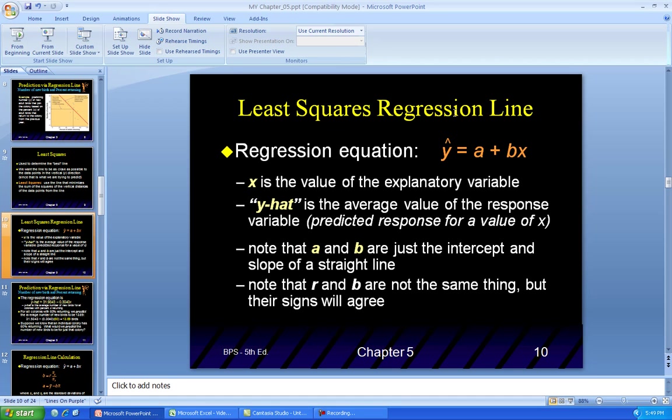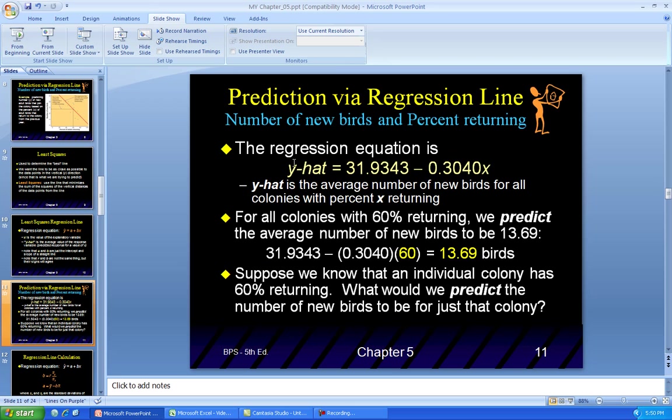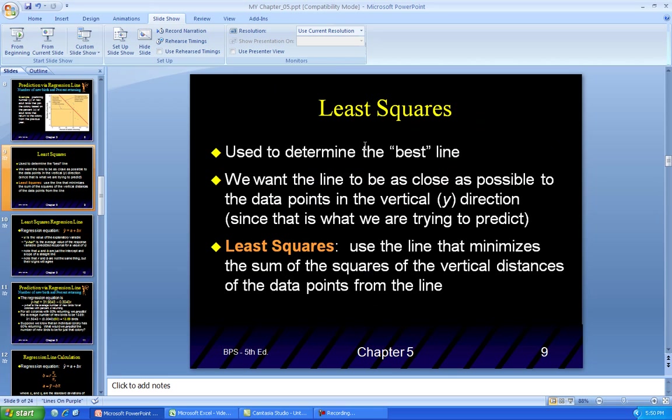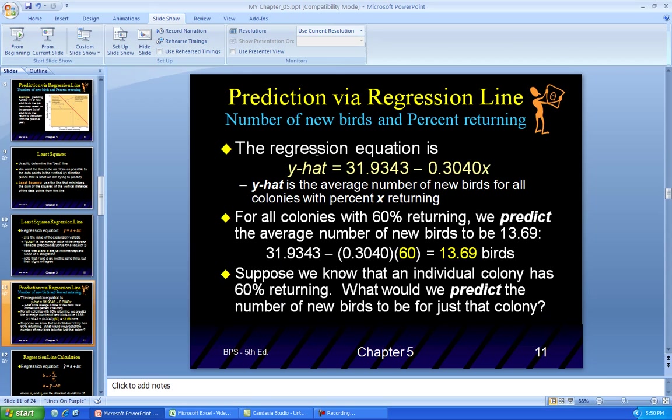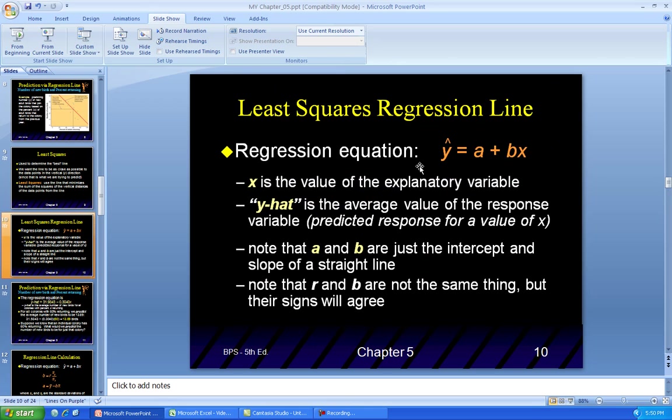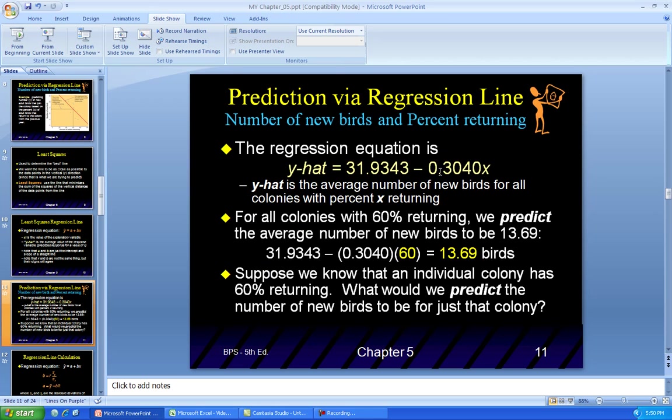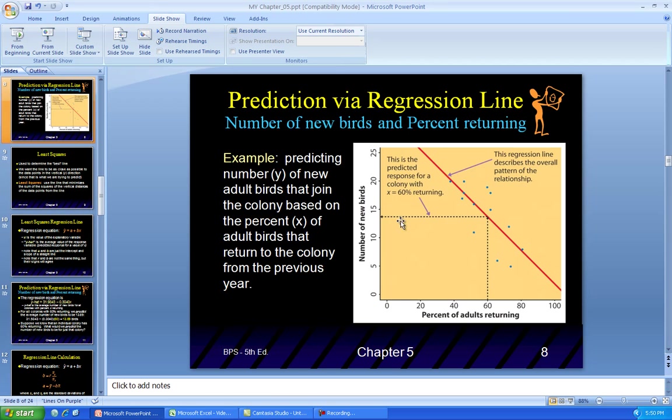So going back here, we're going to find the least squares of the regression line. And the equation that you get is this. Y hat equals a plus bx. Now, if you remember from algebra, this is very similar. You had a y equals mx plus b. Very similar. But in stats, you have a different definition. We're not going to worry about these definitions so much as long as you know how this equation works. Where do these numbers come from? Y hat. This is from the graph here. Let's go back to the graph to remind you. They found this equation by doing all of these numbers. And how did they get what did they get? They got this y hat. Y hat right there. Equals 31.9343 minus 0.3040x. So this is the average number of new birds for all colonies with %x returning.